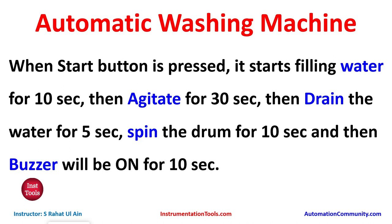In this case we will use a normally open contact for the start button. For filling we will use a timer TP, for agitation we will use TON and TP, for draining we will use TON and TP, and for spinning and buzzer also we will use TON and TP. TON will be used to delay and TP will be used to keep that output on for some time.